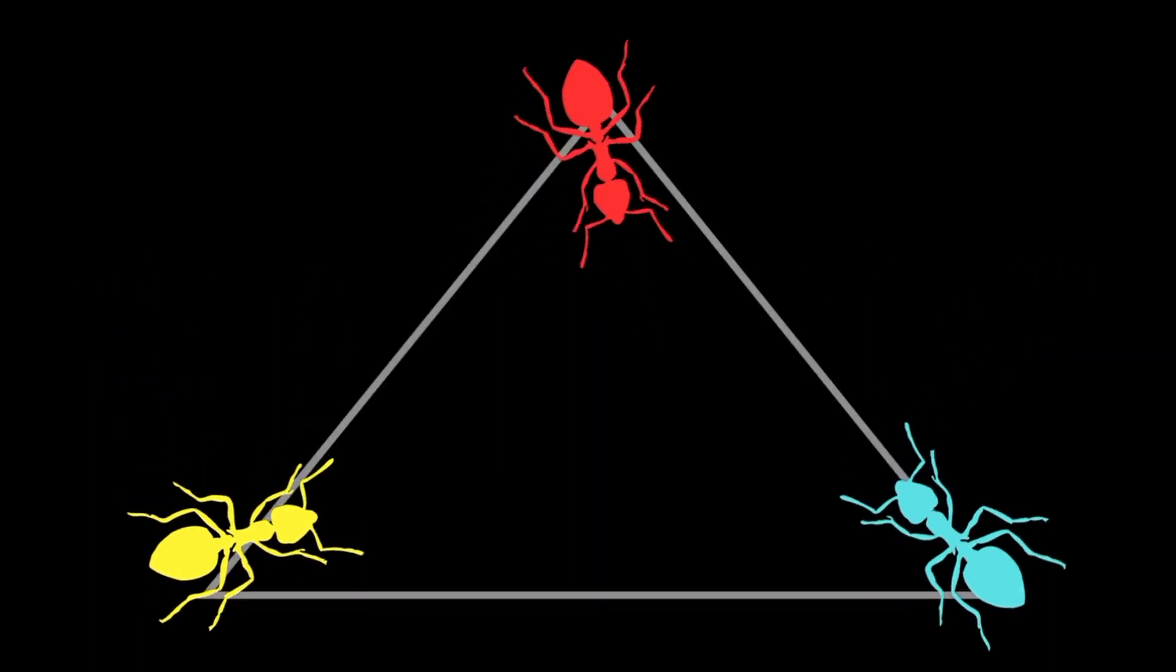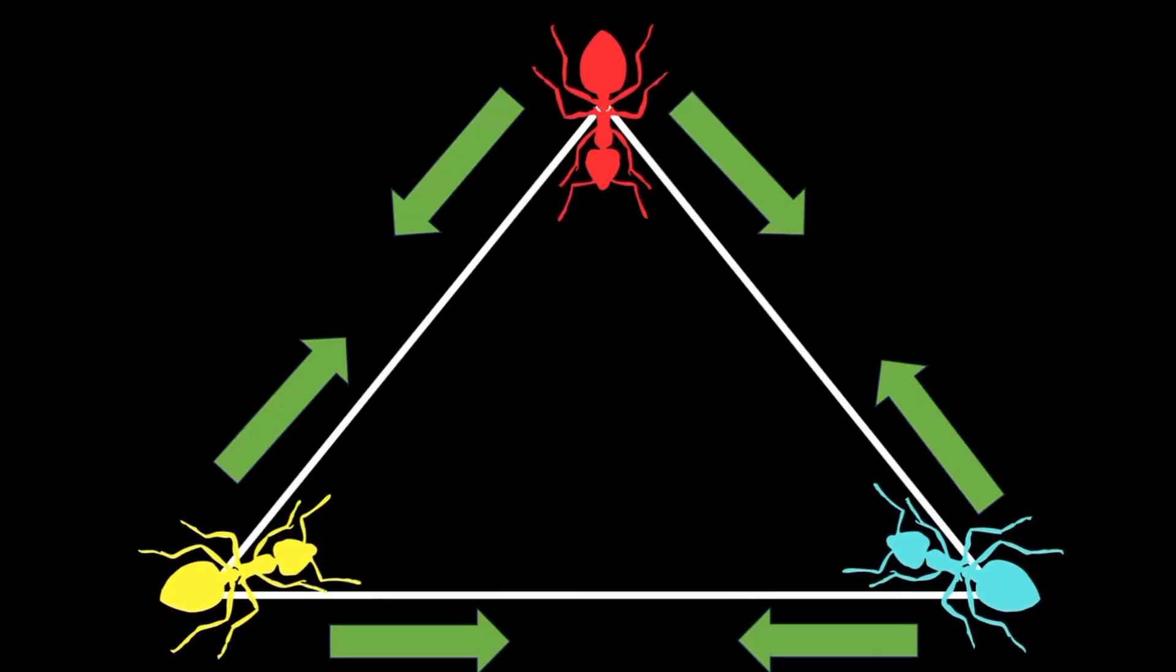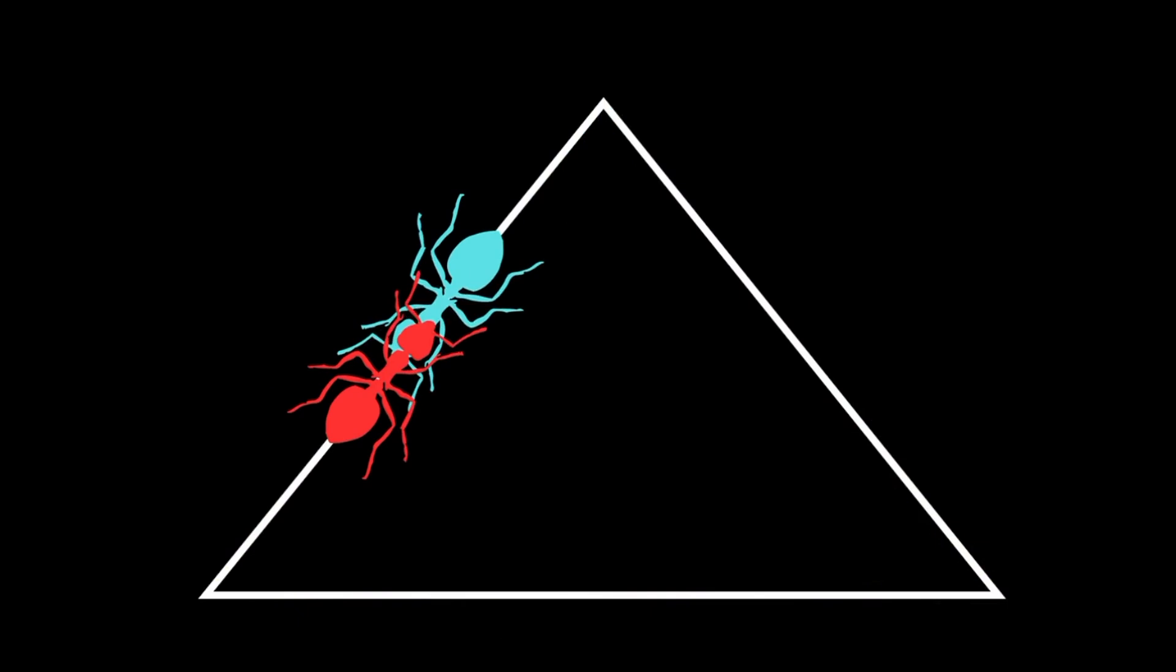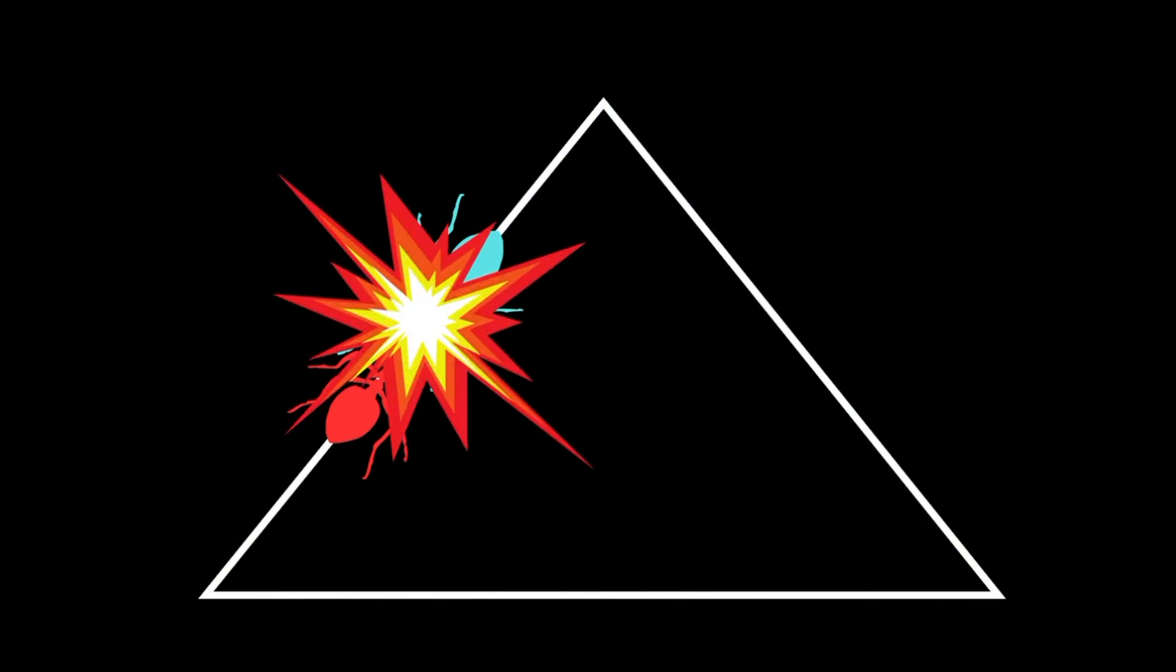There are three ants. They sit at the corners of an equilateral triangle. All ants pick an edge to walk randomly with equal probability and move along the edges at the same constant speed. What is the probability that any two ants collide?